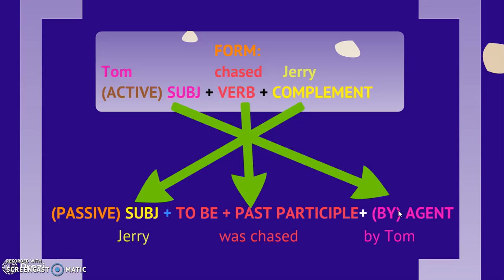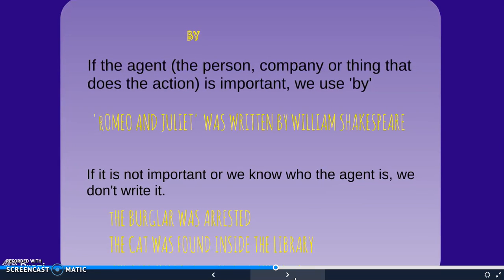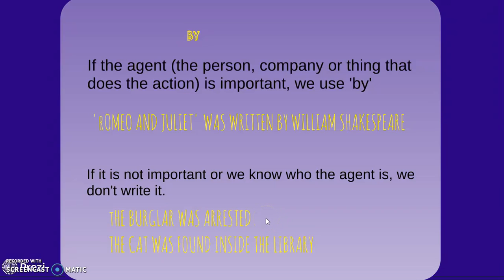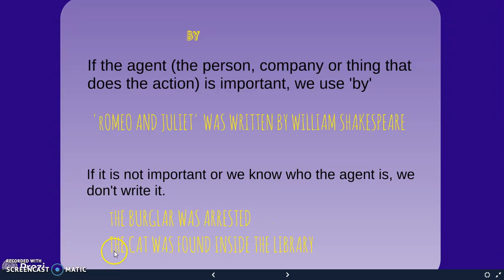If the agent — that is the person, company, or thing that does the action — is important, we introduce it with the preposition 'by.' For example: 'Romeo and Juliet was written by William Shakespeare.' In this case, it is important to mention who wrote the play. But there will be cases in which the agent is not important, or we know who it is, so we don't need to mention it. For instance, 'The burglar was arrested' — we don't need 'by,' because we know the police arrest people who commit crimes. Or: 'The cat was found inside the library' — what is important is that someone found the cat, but we don't know who. So the agent is not important; we don't need to add 'by someone.'